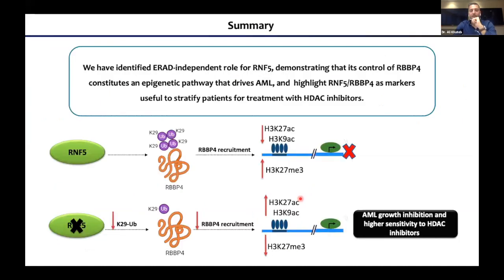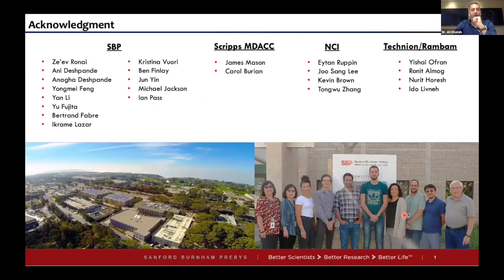To summarize, we identified an ERAD-independent role for RNF5, demonstrating that its control of RBB4 constitutes an epigenetic pathway driving AML. Upon RNF5 inhibition, there is less K29-linked ubiquitination of RBB4, leading to less recruitment to target genes and less repression of genes affecting AML growth and response to HDAC inhibitors. Hopefully, we can stratify AML patients for HDAC inhibitor treatment based on RNF5 and RBB4 expression levels. Thank you for listening — I'll be happy to take any questions.